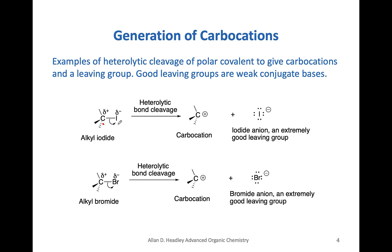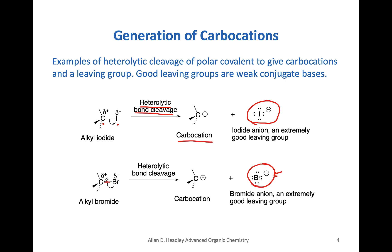Here we have a carbon bonded to iodide. This bond will break because I⁻ is a very good leaving group — a very stable conjugate base — and we generate a carbocation via heterolytic cleavage. Similarly, bromide is a good leaving group. Its conjugate acid is HBr, a very strong acid. So the heterolytic cleavage of this bond gives Br⁻ and a carbocation. That's one way of generating carbocations.